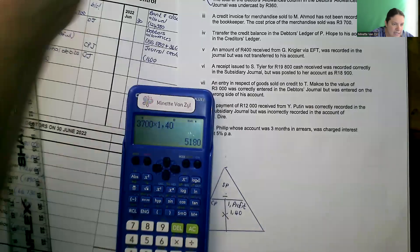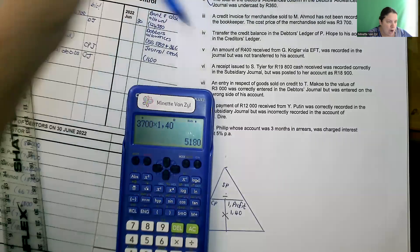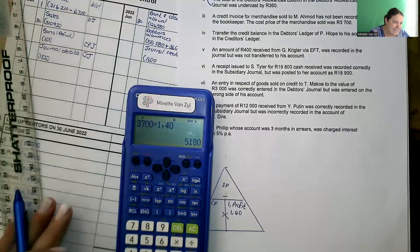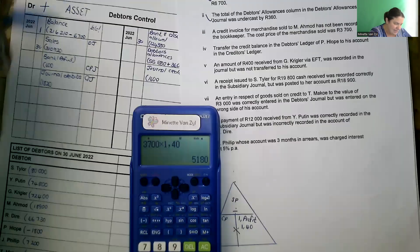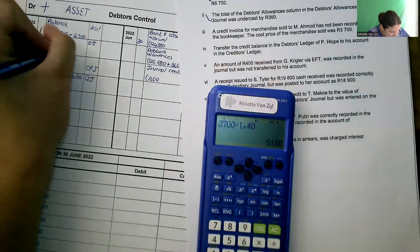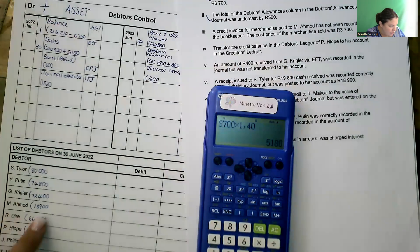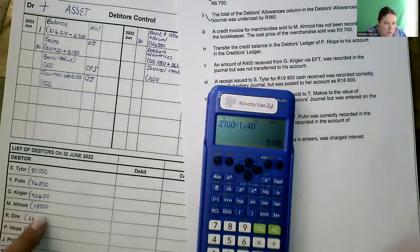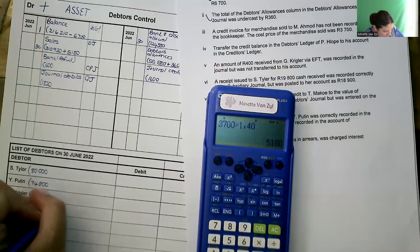We'll take the cost price, multiply by markup profit, 1.40. So that's 3,700 times 1.40. That's my selling price. Now, they clearly said it has not been recorded, which means both the debtors control and the debtors list will be affected. So at sales, we will add 5,180 and Amode, if we sell to him on credit, he will owe us more money, 5,180.